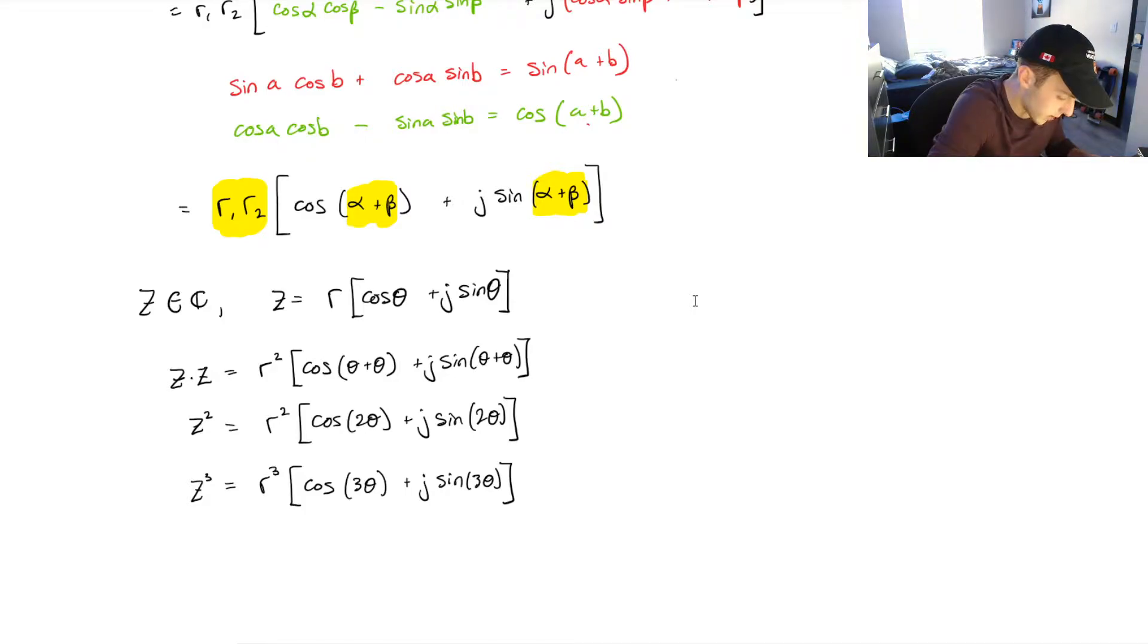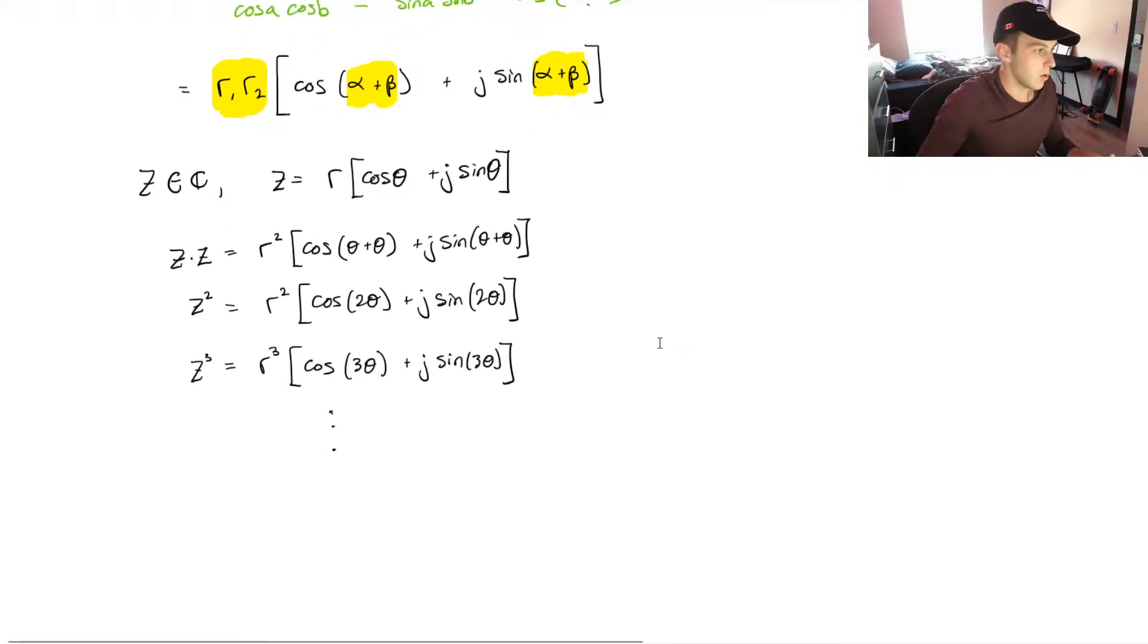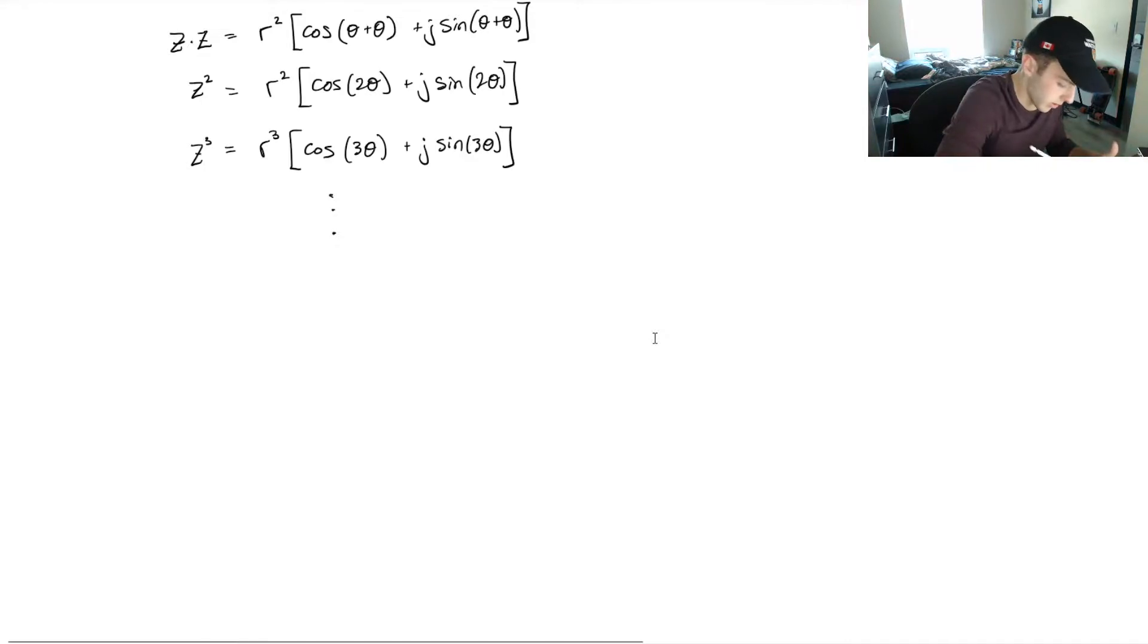And if you kept doing this to infinity, then you'd notice there's a pattern. You've probably already noticed the pattern. And it's z to the n is equal to r to the n times cosine of n theta plus j times the sine of n theta.